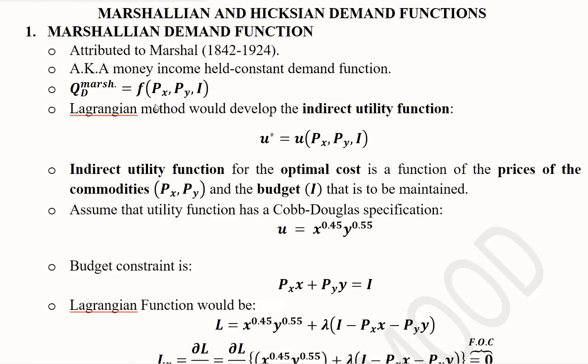Now, how can we get a specific form of it? We can do this by using the Lagrangian multiplier method, and we can also develop the indirect utility function as a result of this process.